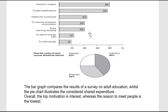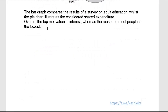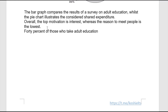I gave an overall view for the bar chart part. I could have given one for the pie chart too, but I just skipped it. So I noted the highest and the lowest. Let's get started with the bar graph. 40% of those who take adult education are purely interested in the subject.